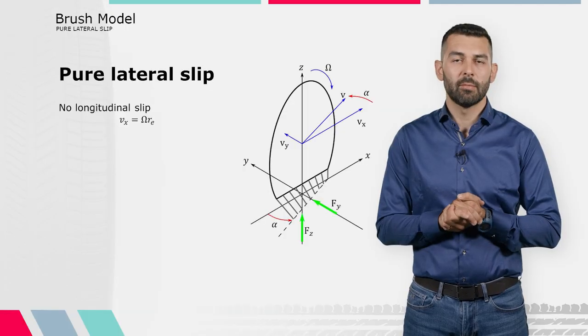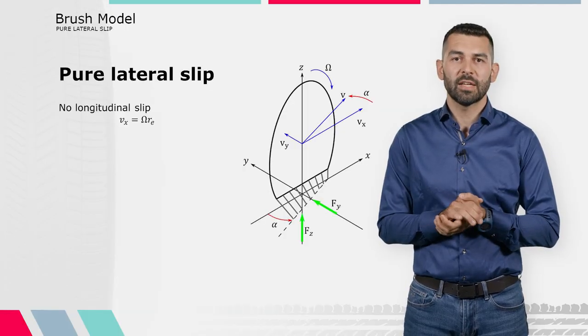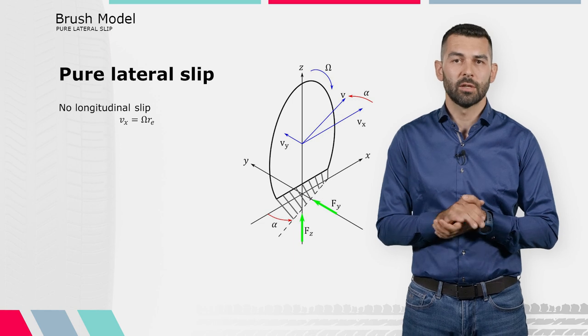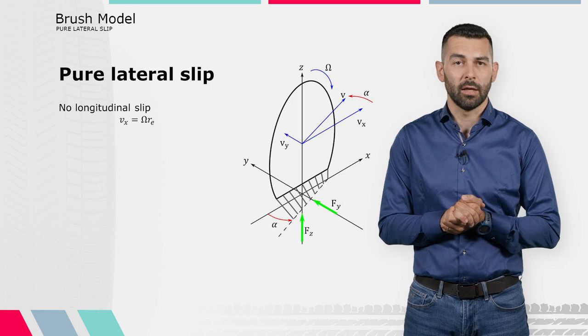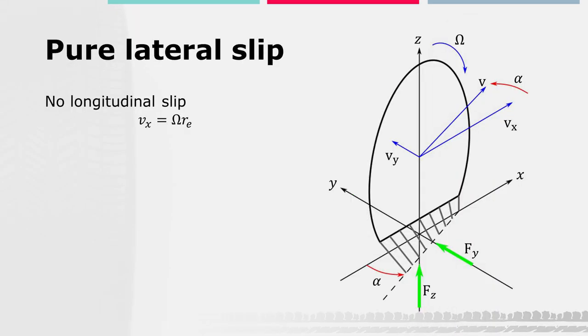Going back to the kinematics of the wheel, the pure lateral slip condition is obtained when the longitudinal slip is zero. Thus Vx equals omega Re. Then, the theoretical lateral slip sigma y and the slip angle alpha are defined.